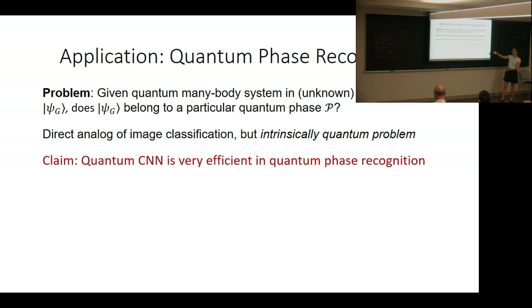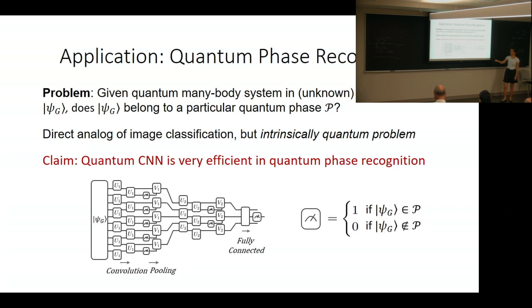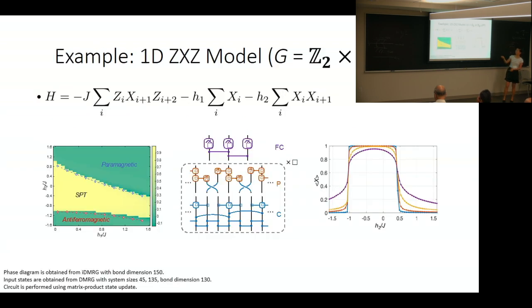Our claim is that this quantum CNN circuit is very efficient for quantum phase recognition. The final measurement yields one with very high probability if you're in the phase and zero otherwise.